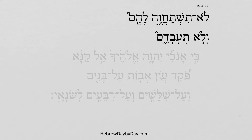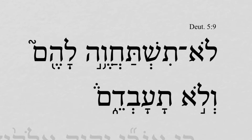Deuteronomy 5:9. This verse continues the second commandment not to make images, and it goes on: 'You shall not bow down to them, and you shall not serve them.'